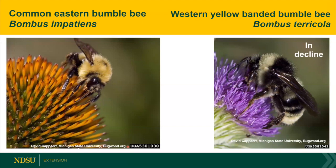Here are a couple of common bumblebees I have in my pollinator garden: the common eastern bumblebee, Bombus impatiens, and then the western yellow-banded bumblebee, Bombus terricola. This latter one is actually starting to go into decline.